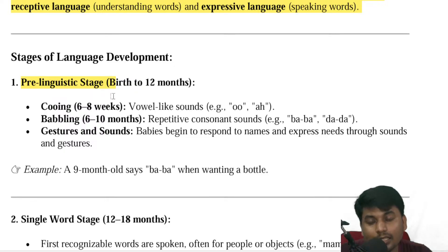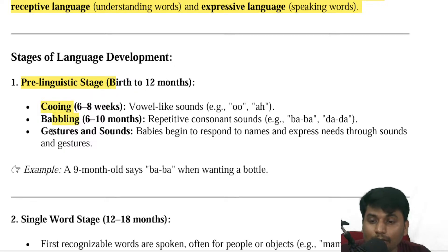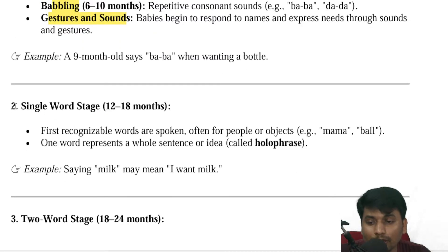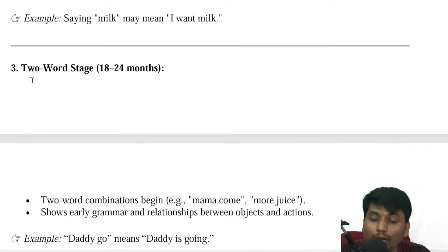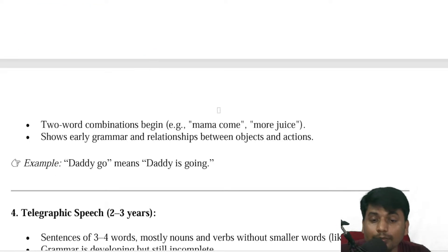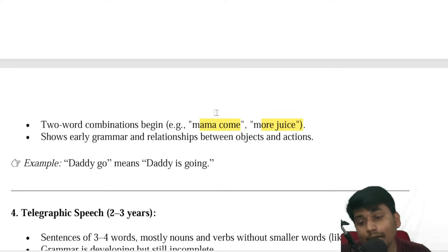Pre-linguistic stage: birth to 12 months — cooing, babbling, gestures, sounds. Then the single-word stage around 12 months: single-word sentences. Then the two-word stage around 12 to 18 months. For example: 'More juice,' 'Mama, go.' Two words forming a sentence.